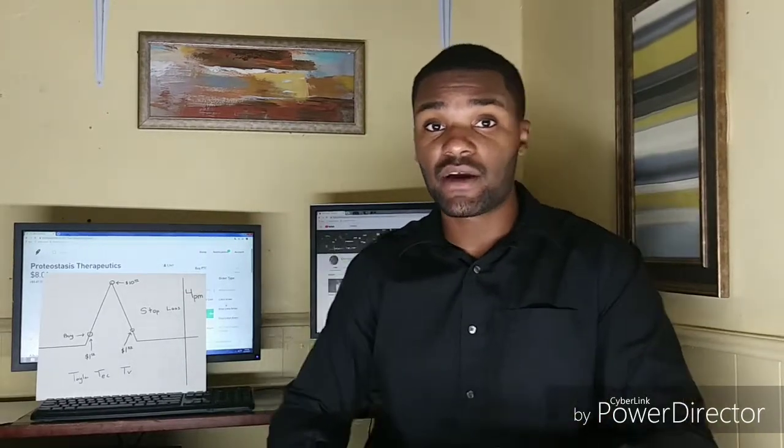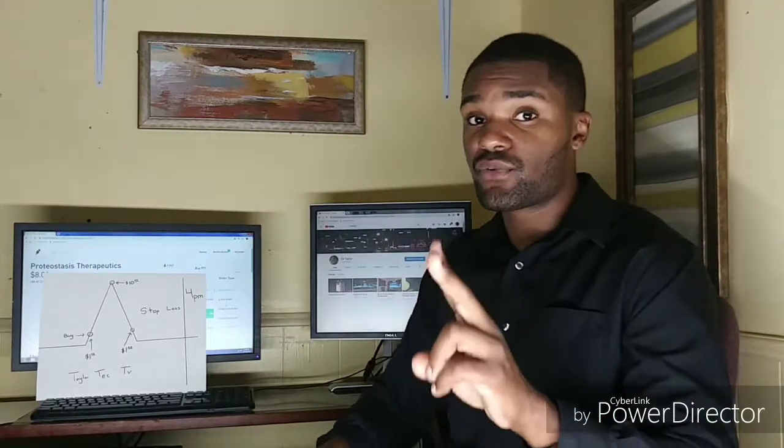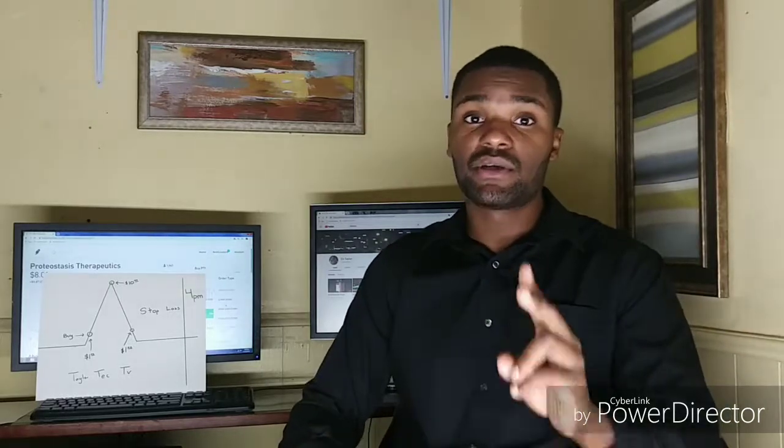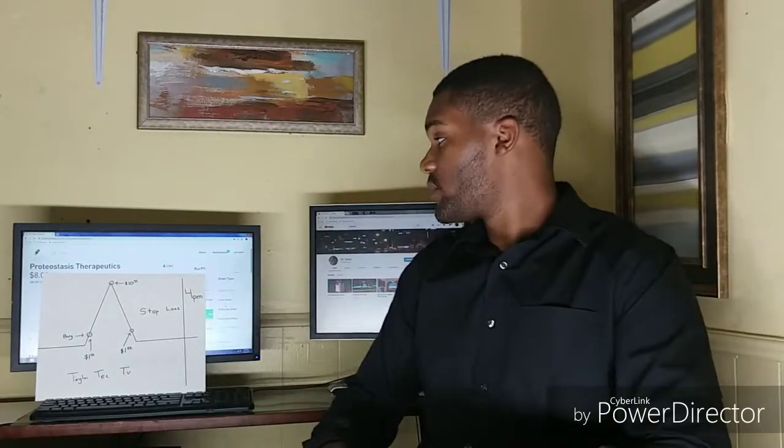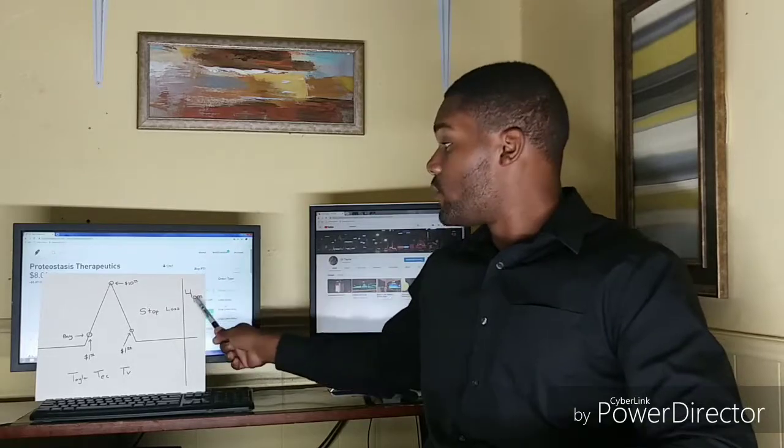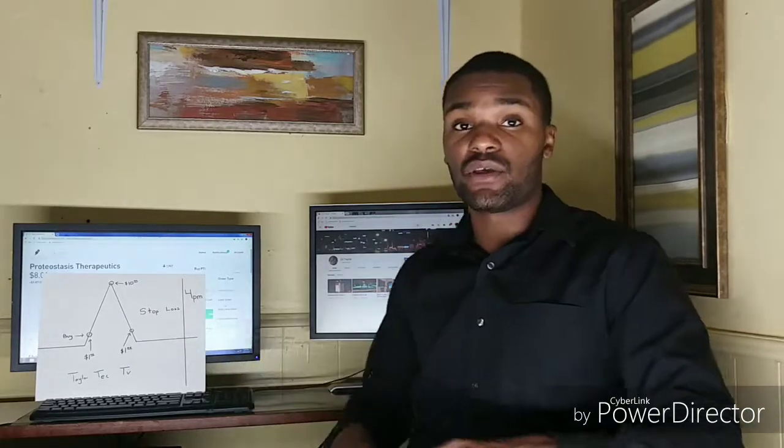So here are the two foolproof things you must always do to guarantee making money: turn on your stop loss, and always cash out before 4 p.m.